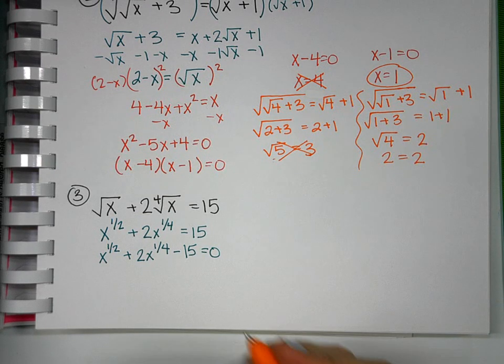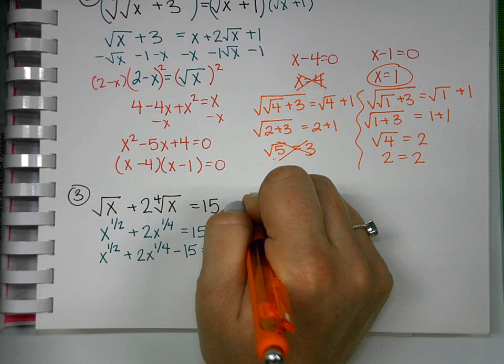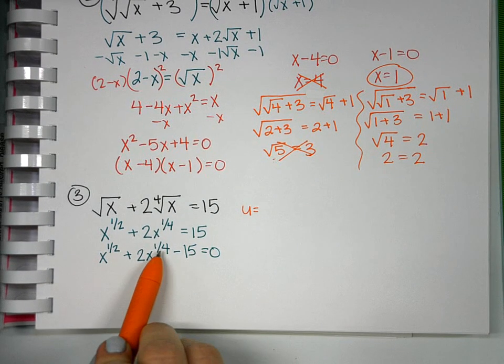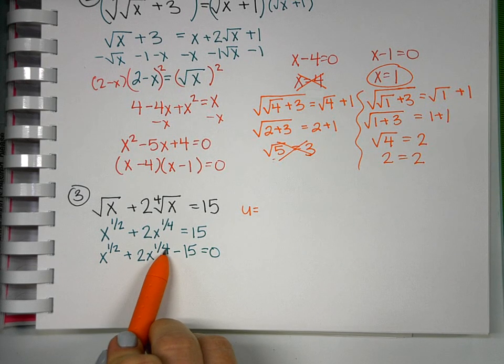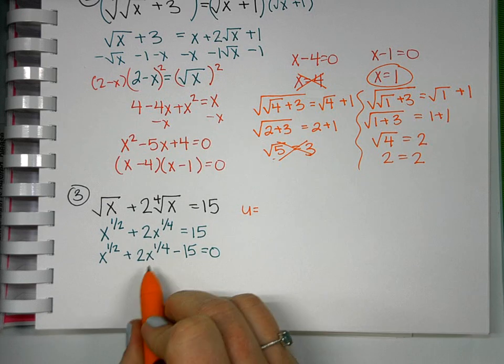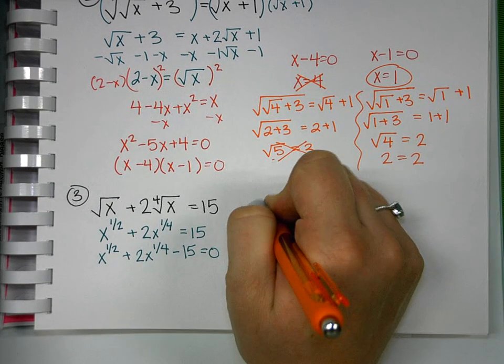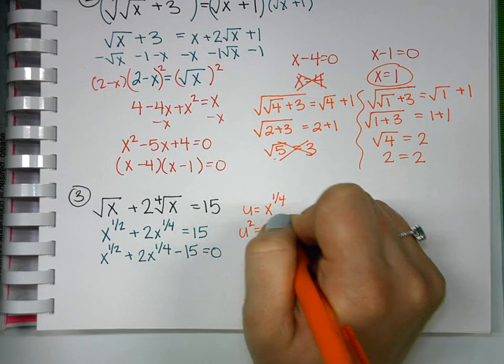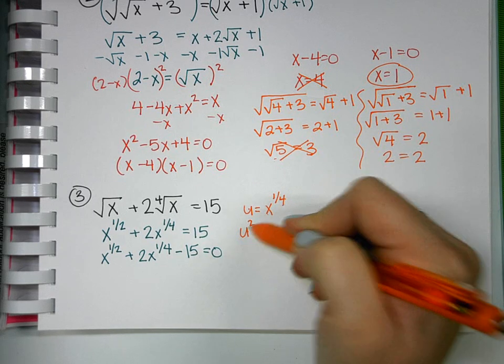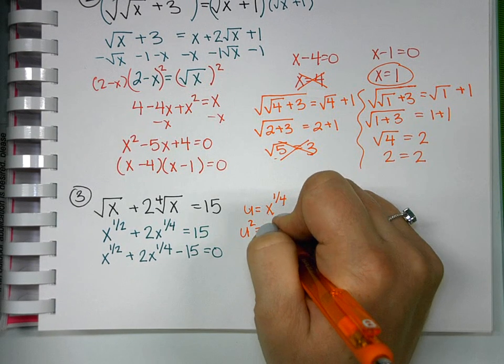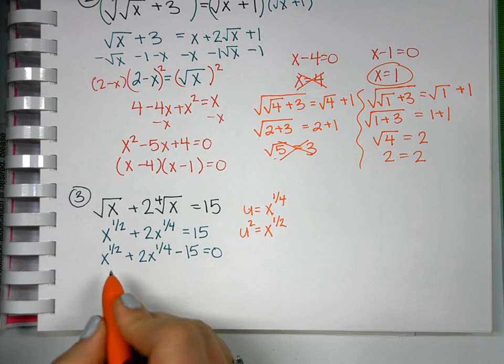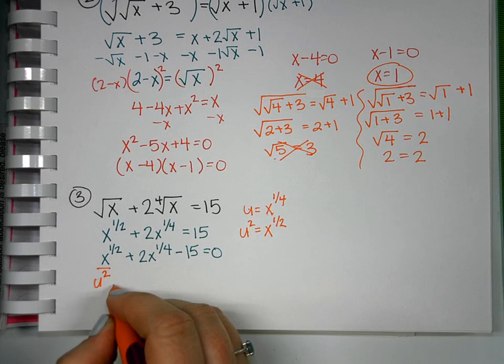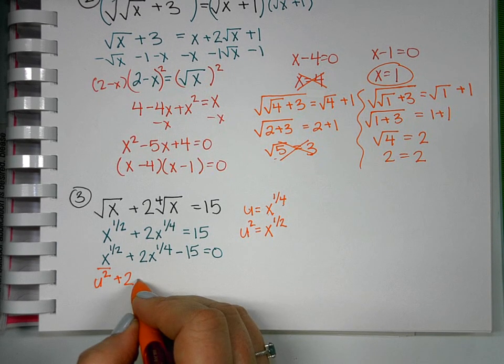Now it's similar to the problems we did on Tuesday. What I'm going to look for is a u so that I can substitute it in. I always look at the fractions and which fraction is smaller, and I test that one for my u. So x to the 1 fourth is the smaller fraction. When I square x to the 1 fourth, this would become u squared. X to the 1 fourth would become 1 half, which I happen to have right here. Which means I can substitute u squared for x to the 1 half, and I can substitute u for x to the 1 fourth.